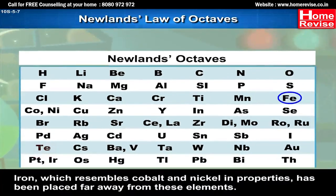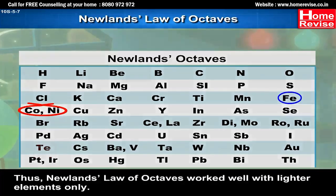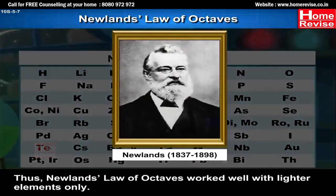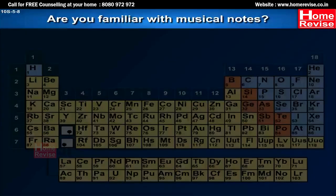Iron, which resembles cobalt and nickel in properties, has been placed far away from these elements. Thus, Newland's Law of Octaves worked well with lighter elements only.